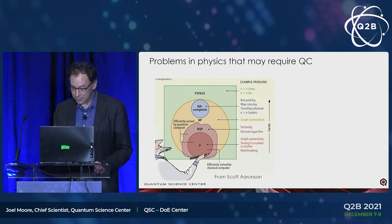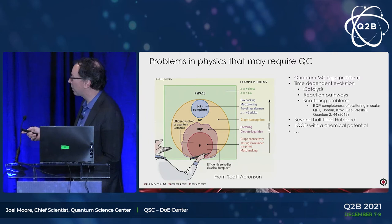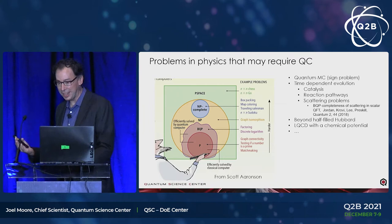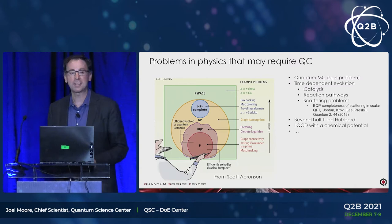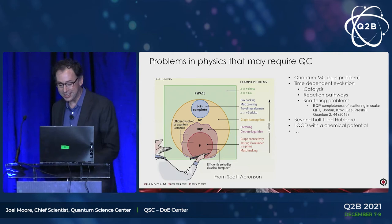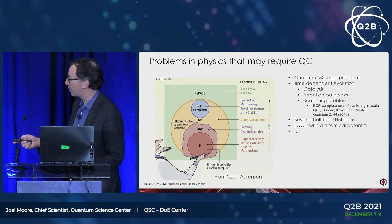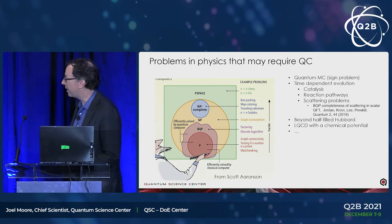Within just focusing on physics, there are a lot of problems where we believe — even if we can't prove it rigorously, but after 50 years of trying — that most materials where the electrons interact strongly with each other and invalidate a one-electron picture are hard. No one is going to come up with a classical algorithm that will easily solve predicting the temperature of high-temperature superconductors. We do have an understanding of which things are likely to remain hard on quantum computers, which are doable classically, and the interesting range in between.